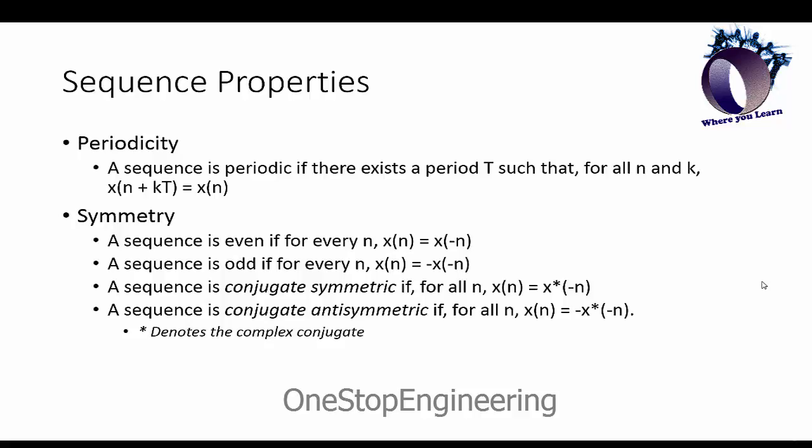Then we have two different kinds of symmetry, new kinds of symmetry, that we'll be talking about when we're talking about sequences of complex numbers. We have conjugate symmetry which is basically even but also considering the conjugate, and conjugate antisymmetry which is almost the same as odd, except also considering the conjugate of the second sequence there.